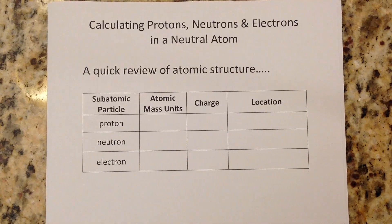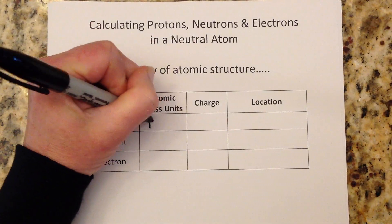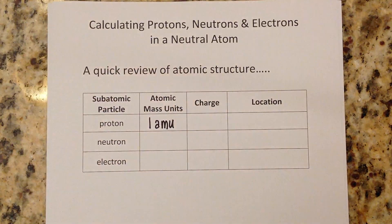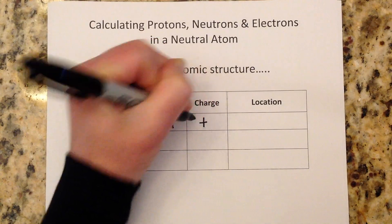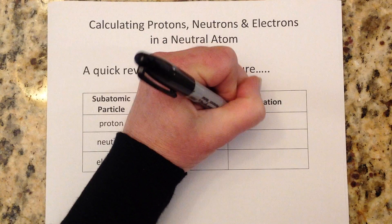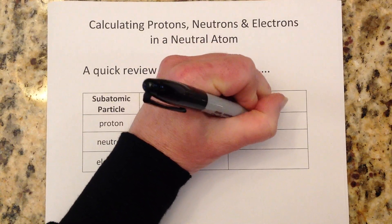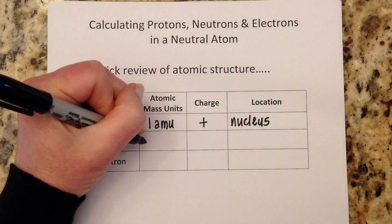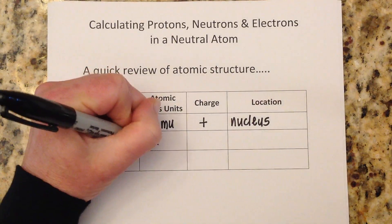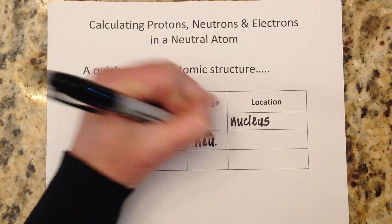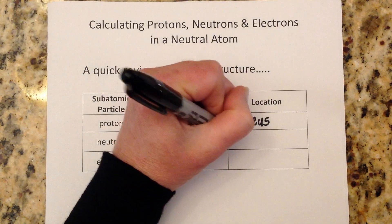Protons have a relative mass of one — we often say one AMU, atomic mass unit. They have a positive charge, and they are located in the nucleus. Neutrons also have a relative mass of one AMU. They are neutral, and they are also located in the nucleus.